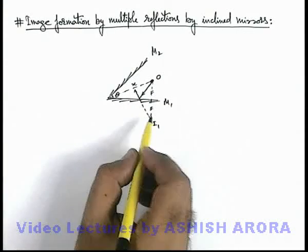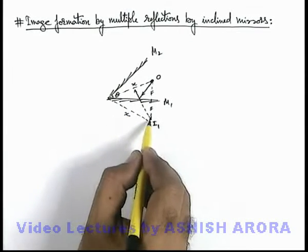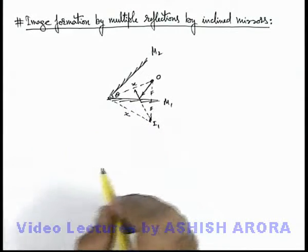So here by symmetry we can say that this image I1 will also be located at a distance x from the point of intersection of the mirrors.